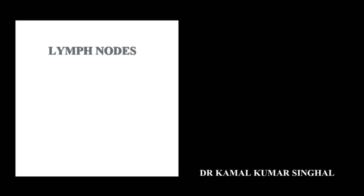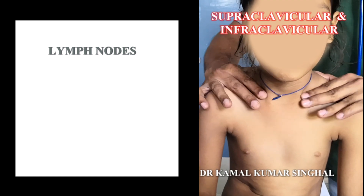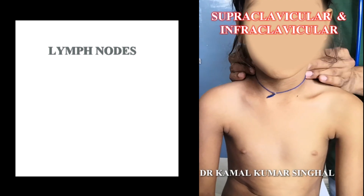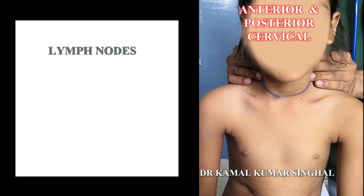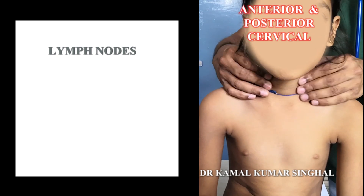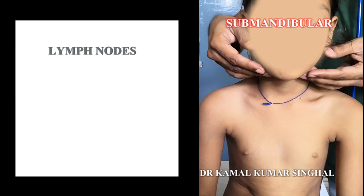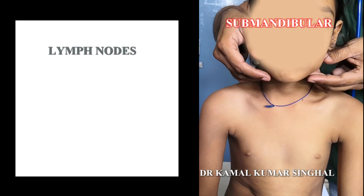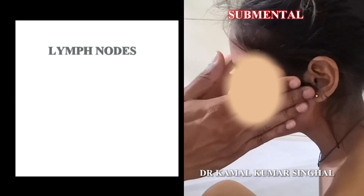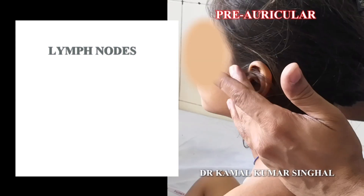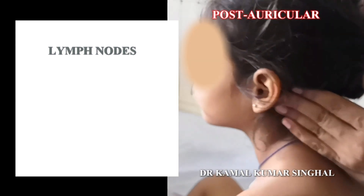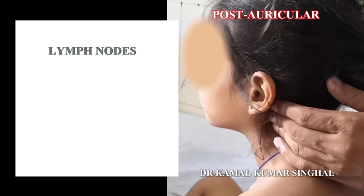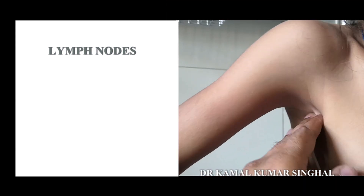Now examine the regional lymph nodes — the supraclavicular nodes, infraclavicular nodes, posterior and anterior cervical lymph nodes, the submandibular nodes, the submental nodes, and the axillary nodes.